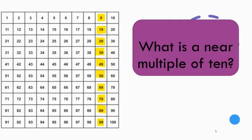With these numbers, we will have a near multiple of 10. Next to that, we also have the following numbers: 11, 21, 31, 41, 51, 61, 71, 81, and 91. For example, 11 is a near multiple of 10 of 10.